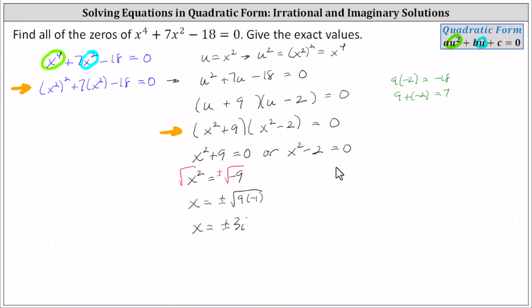And then for the second equation, we add two to both sides. Take the square root of both sides of the equation, include a plus or minus on the right. Solving for x, we have x equals plus or minus square root two.